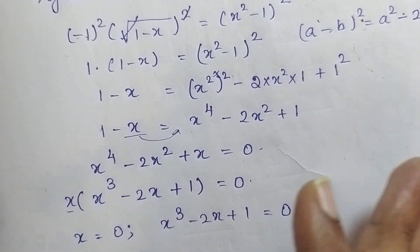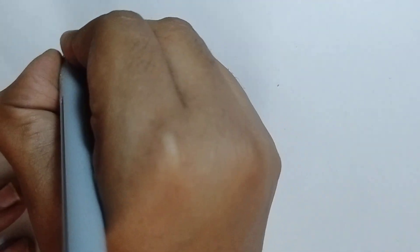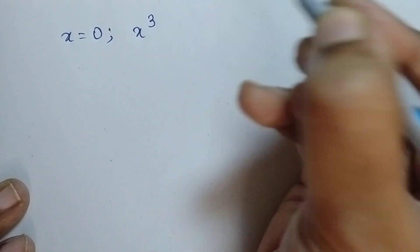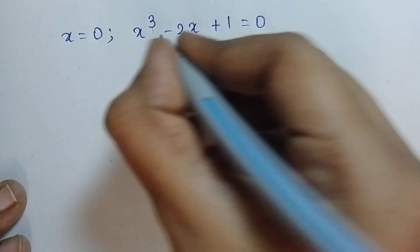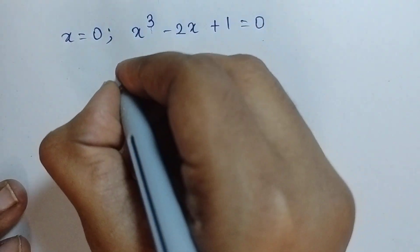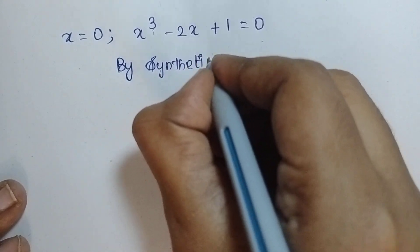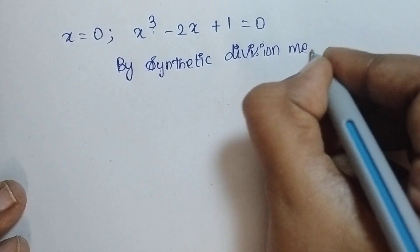So I am going to solve this. x is equal to 0 — we found one of the values. The remaining equation is x³ - 2x + 1 = 0. I am going to solve this equation by the synthetic division method, which makes the problem simpler.